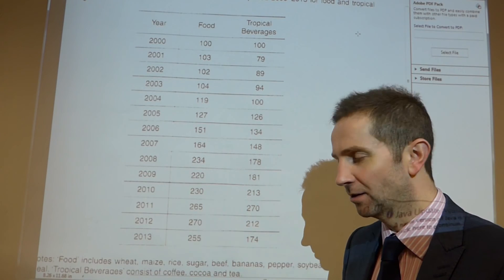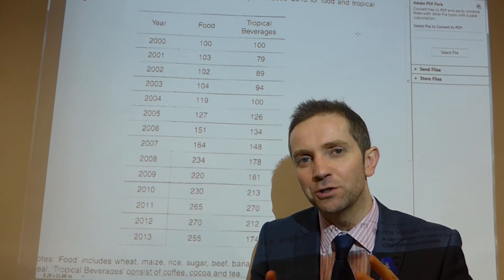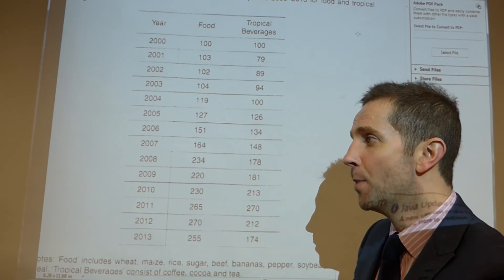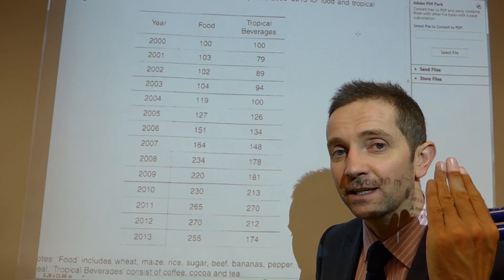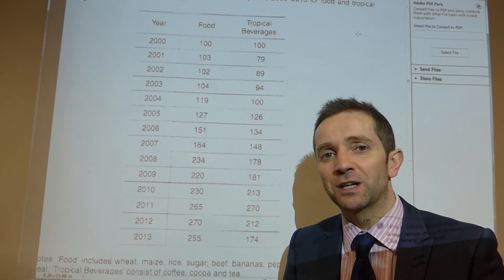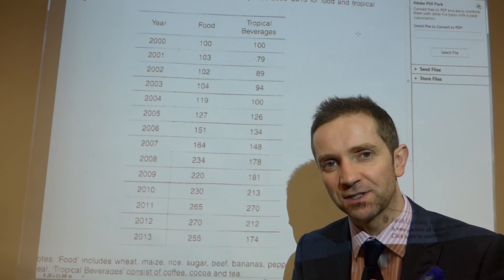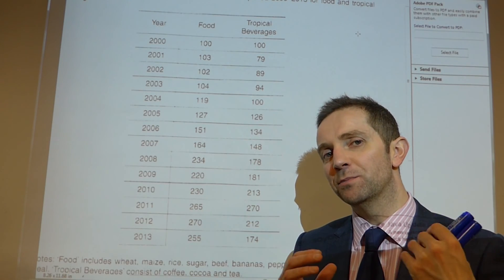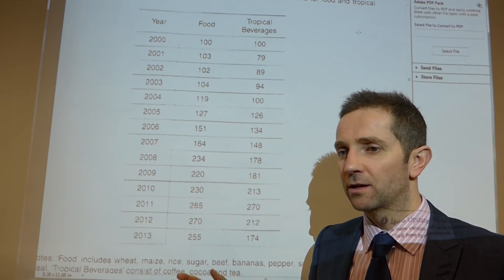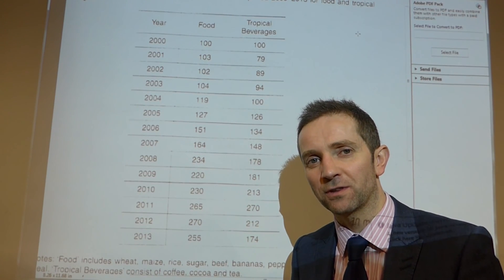That ladies and gentlemen is how you go about comparing data. For each mark you must reference both sides of the data and use comparative terms. The comparative terms we're using here include: 'more than', 'less than', 'both reach the same', 'greater fluctuations relative to', 'notable falls and rises'. These are all comparative statements and these will get you the comparative marks. If you simply say food prices go up and tropical beverage prices go up, there is no comparative statement and you don't get the marks. I wish you the very best of luck with the compare questions.